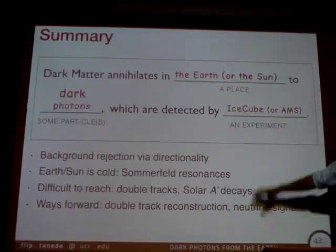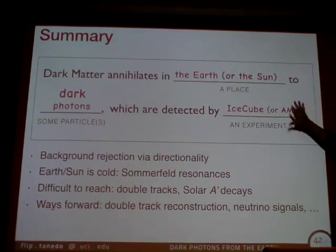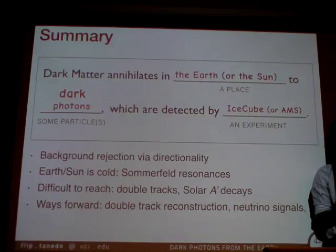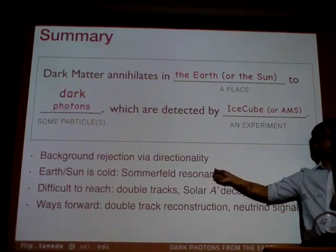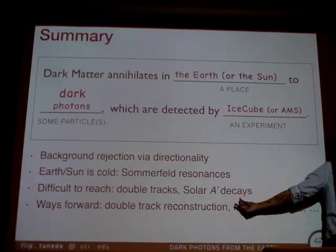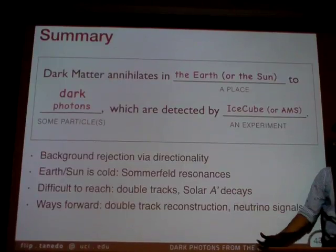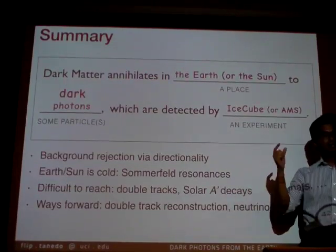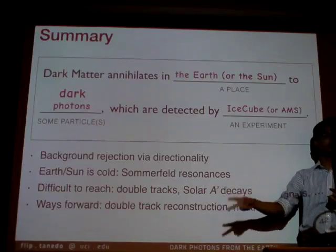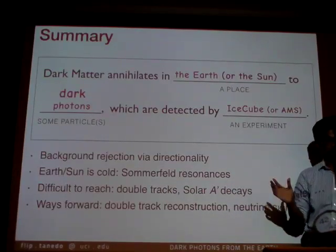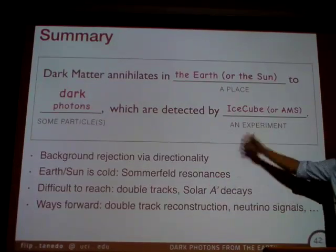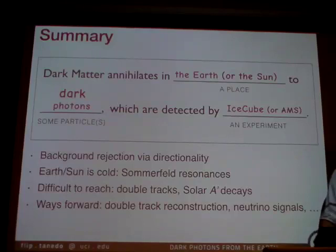Just to wrap things up: here is the map that summarizes our particular indirect detection angle. Directionality is the name of the game. We have this inversion between the Earth and the Sun: now the Earth is actually a much better place to look for dark photons, largely because of the non-perturbative Sommerfeld enhancement. Fun things to think about: what would it take to see double tracks. The dark photons from the Sun are really being hit by B-fields. You could actually look for dark photons coming from the Sun using IceCube, because dark photons sometimes decay into neutrinos — and IceCube is exactly what was designed to look for directional neutrinos from the Sun. Thank you very much.